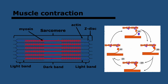Let's look at how contraction actually works. Muscle fibers are made of myofibrils, and these consist of sarcomeres linked end to end. So a myofibril will be one sarcomere after another. Sarcomeres have actin filaments and thicker myosin filaments, shown here in red. Actin is linked to a Z-disc at each end of the sarcomere.